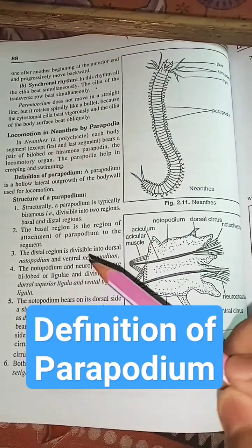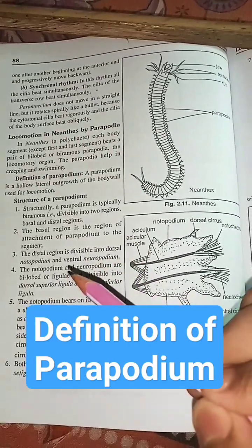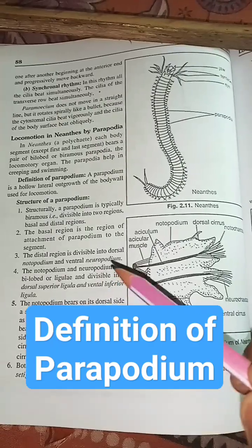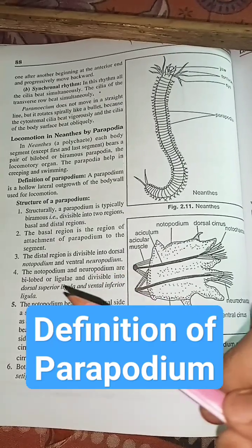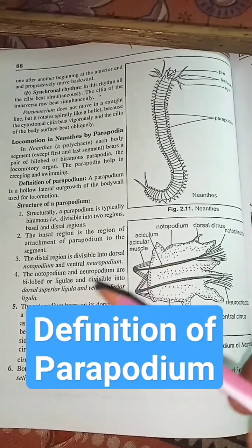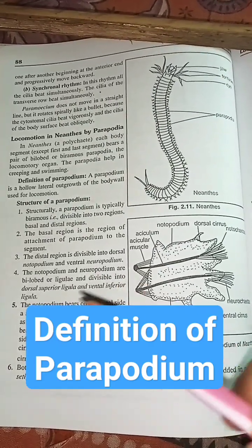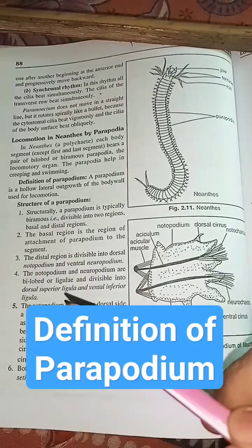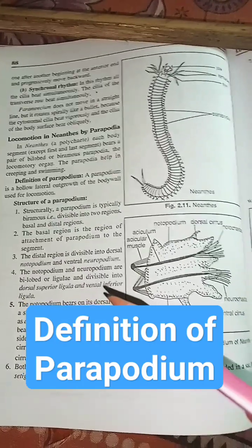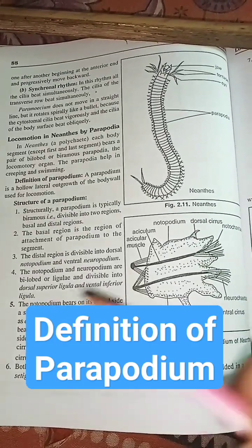The distal region is divisible into dorsal notopodium and ventral neuropodium. The notopodium and neuropodium are bilobbed and divisible into dorsal superior ligula and ventral inferior ligula.